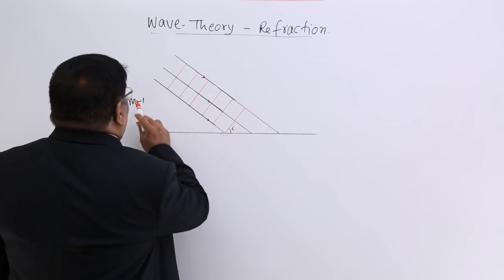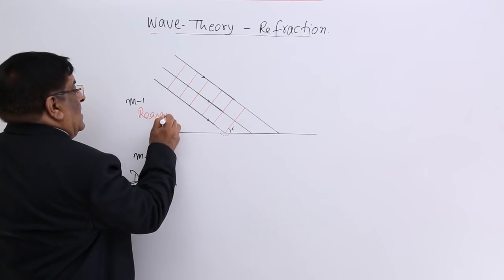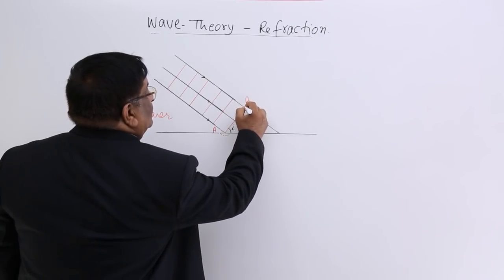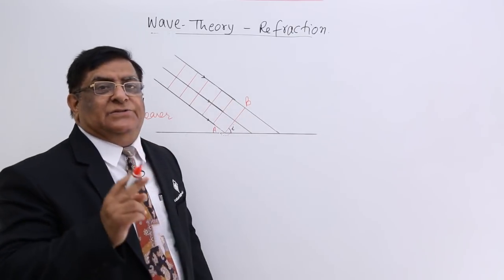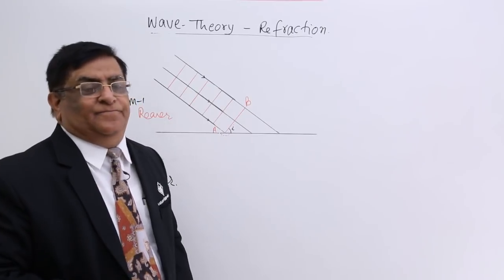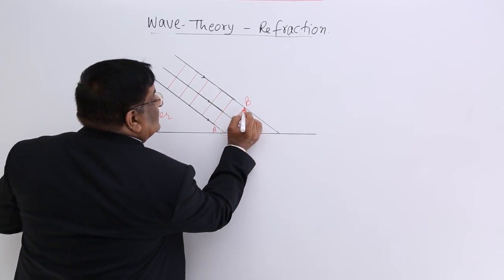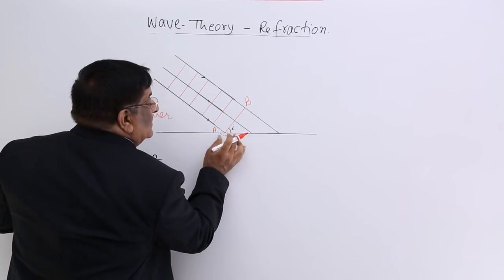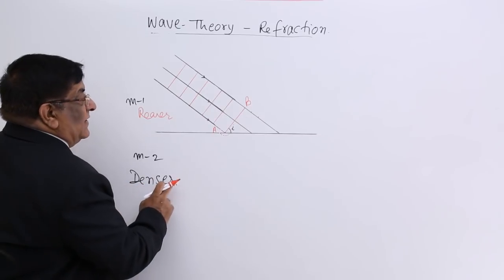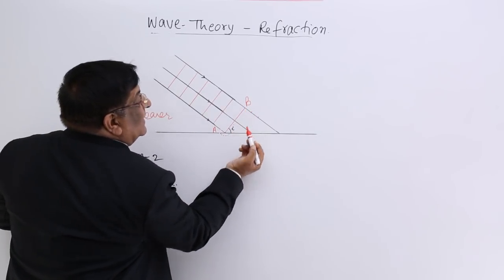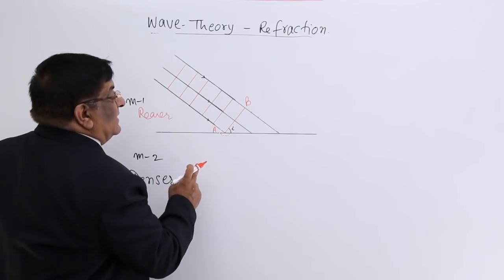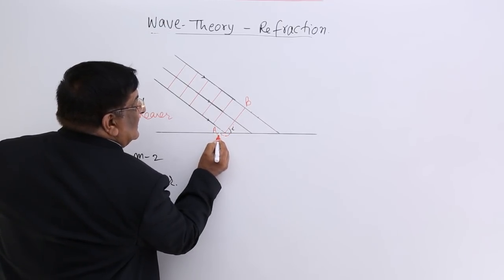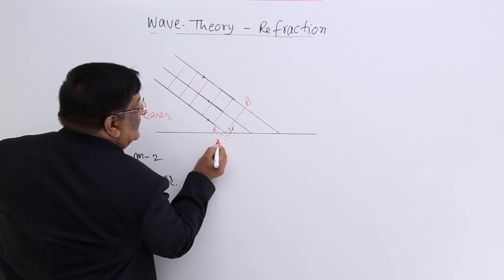Medium 1 is the rarer medium and medium 2 is the denser medium. Point A and point B are both on the same wavefront, so they start acting as secondary sources together. B is making a secondary source, and in 1 second its disturbance reaches a certain distance in the rarer medium, in 2 seconds it reaches further. But in the denser medium, in 1 second it does not reach as far — because this is a denser medium, its speed is less, so it reaches only a smaller distance. In the 2nd second it reaches a bit further, and in the 3rd second a bit more.